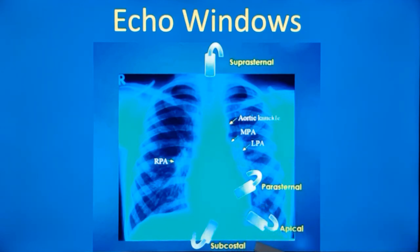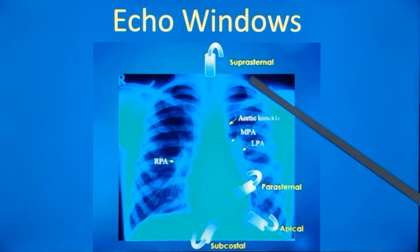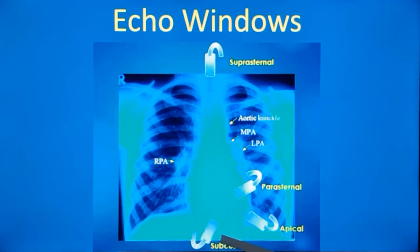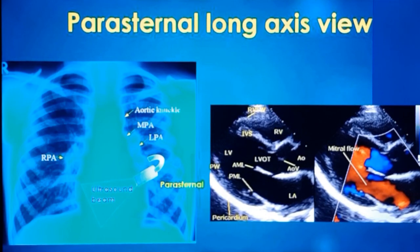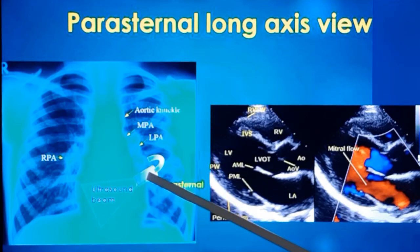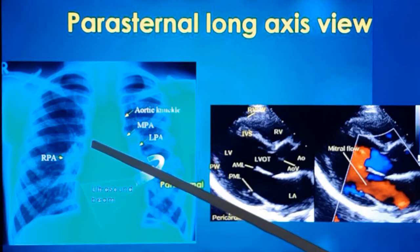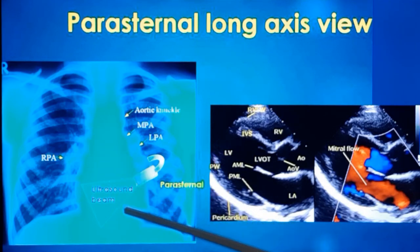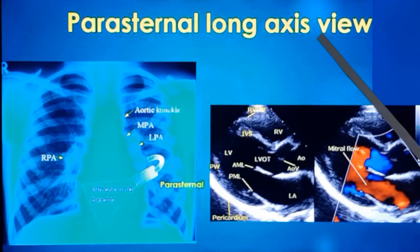Some variation can be there — you can have tilted views if you are not seeing the anatomy properly. So the basic windows are suprasternal, parasternal (that is left parasternal), apical and subcostal. The parasternal view is often the first view obtained in transthoracic echocardiography in adults. In infants, sometimes you will start with the subcostal view. The transducer is placed in such a way that the ultrasound beam cuts the heart in the long axis, which is why it is called the parasternal long axis view.